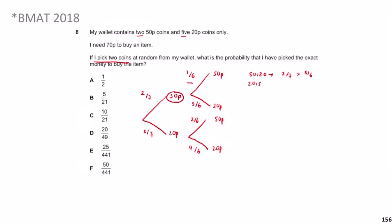To get exactly 70p you need one 50p and one 20p. You can get this as 50p then 20p: (2/7) × (5/6) = 10/42, or as 20p then 50p: (5/7) × (2/6) = 10/42. Adding these gives 20/42 = 10/21. The answer is D.